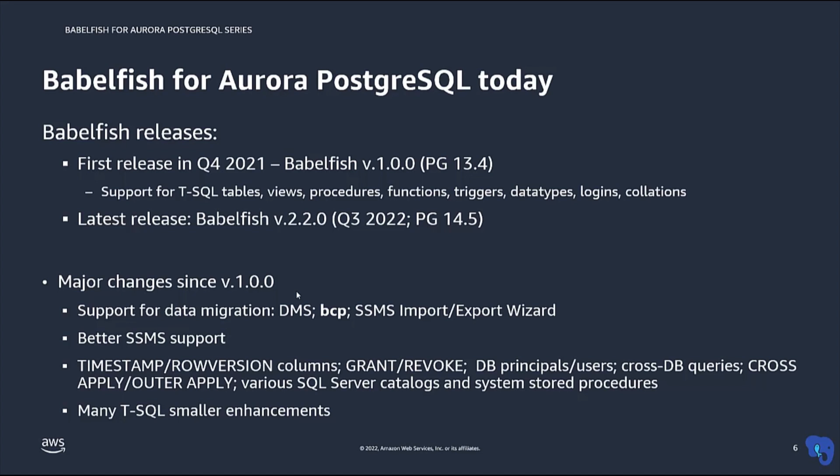For SQL Server Management Studio, in the first release you could only connect with the Query Explorer window. Today, you can also connect with the Object Explorer, even though not all aspects of the Object Explorer work, but it is a much better experience than in that first release. For the big Transact-SQL features that have been added, an important one is the Timestamp column, also known as RowVersion column. Grant and Revoke are now supported for granting object permissions. You can now create database users or database principals and group them together with user-defined roles. Cross-database queries work now, including cross-database procedure executions, and we have support for lateral joins — that is, cross-apply and outer-apply.